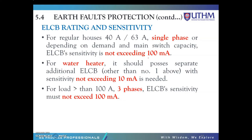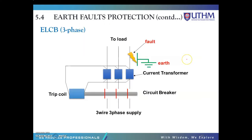For ELCB rating and sensitivity: for regular houses, 40A or 63A single phase depending on demand and main switch capacity. ELCB sensitivity should not exceed 100mA. For a water heater, it should possess a separate additional ELCB with sensitivity not exceeding 10mA. For loads that draw more than 100mA on three phases, ELCB sensitivity must not exceed 100mA. There are two types of earth leakage circuit breaker: voltage ELCB and current ELCB. In this chapter, we will discuss more on the current ELCB.